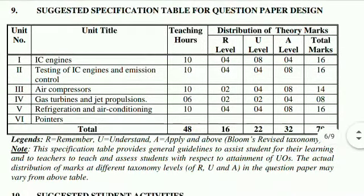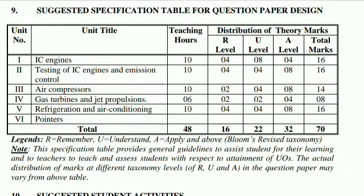The first unit has a total of 10 lectures, the second unit has 10 lectures, the third unit has 10 lectures, the fourth unit will take 6 lectures, and the fifth unit will take 10 lectures. For MSBTE, the first unit will be asked for 16 marks, second unit for 16 marks, third for 14 marks, fourth for 8 marks, and the last one for 16 marks, totaling 70 marks.